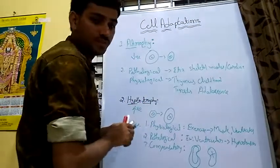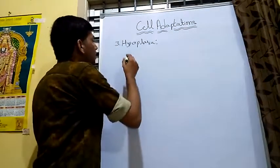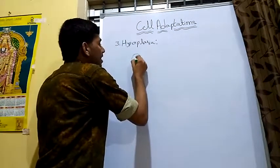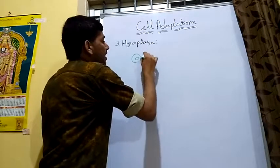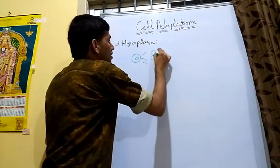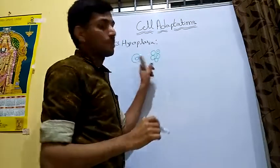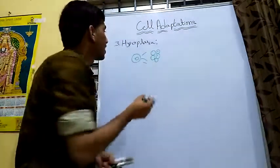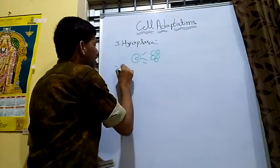Next, we move to hyperplasia. Hyperplasia is an increase in the number of cells. Where a cell was one, it increases in number of cells. There are also three types of hyperplasia.